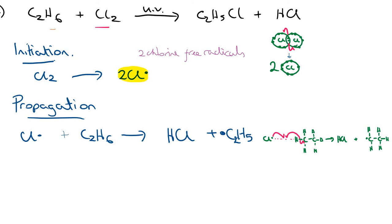There's a second propagation step, whereby that radical that you made, C2H5, reacts with the other reactant, which is chlorine molecules. As that reacts, this radical just forms a chemical bond with one of the chlorines, and you form C2H5Cl, which is our desired product. And we reform our chlorine radical there, our reactive species.